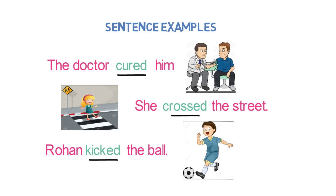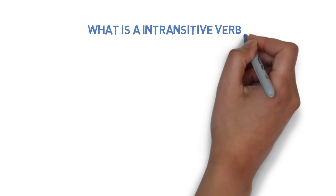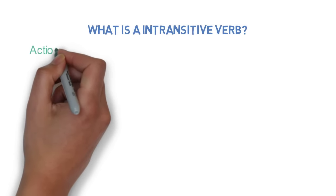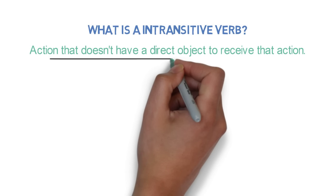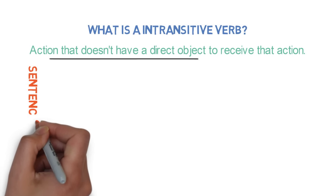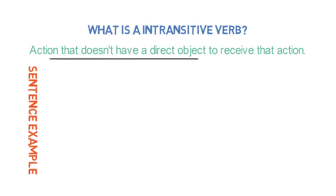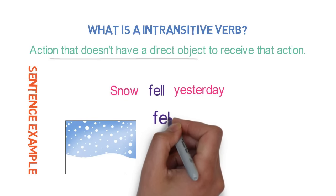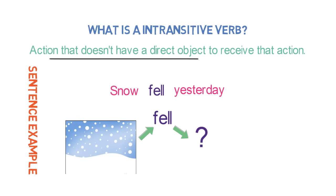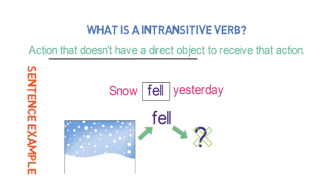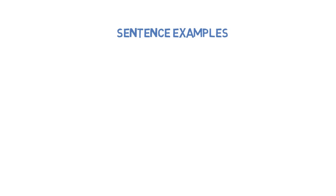Now that we are clear about transitive verbs, let's look into intransitive verbs. An intransitive verb is an action that doesn't have a direct object to receive that action — so it's an action verb without a direct object. For example: Snow fell yesterday. Here, 'snow' is the subject and 'fell' is the action, but we cannot say the snow fell on whom. In other words, there is no direct object to receive the action, so it's an intransitive verb.